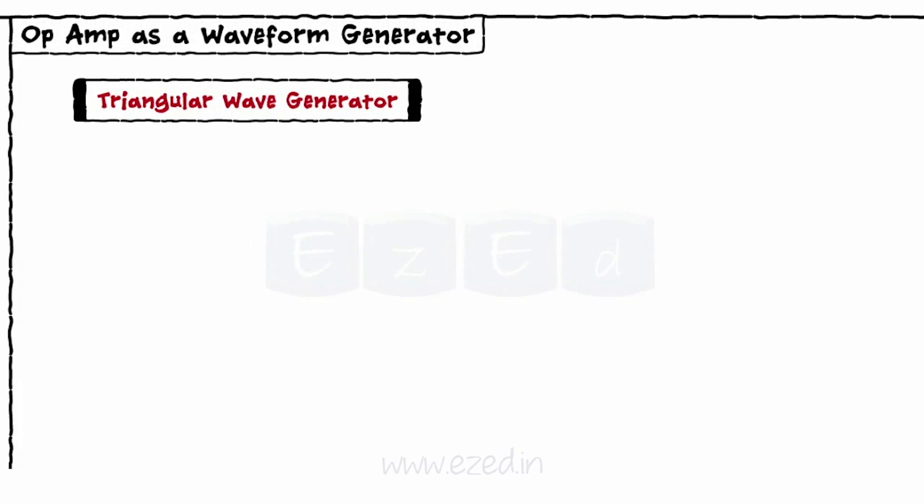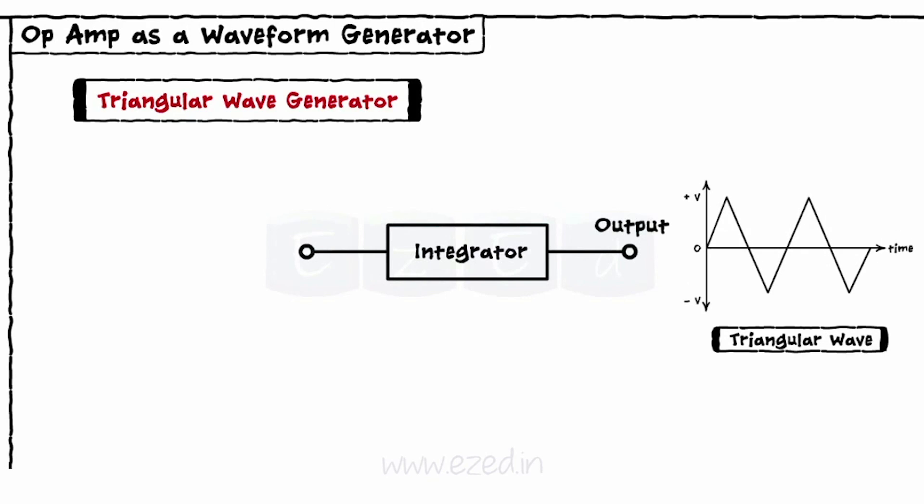Now, we see an op-amp as a triangular wave generator. We have already seen that the output of the integrator is a triangular wave if the input given to it is a square wave.